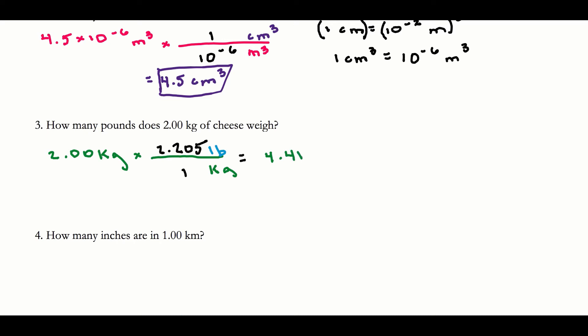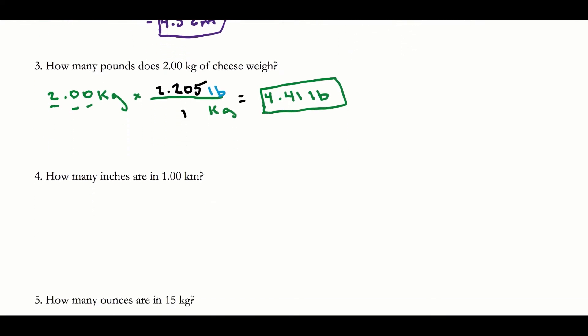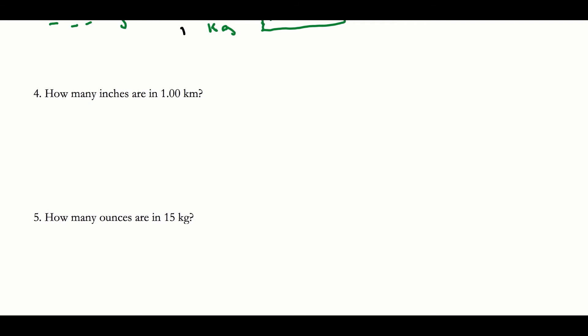Let me double-check sig figs. 2.00 has a decimal present, so I count from left to right — the first significant digit is 2, giving me three sig figs. 4.41 also has three sig figs, so that is an acceptable answer.